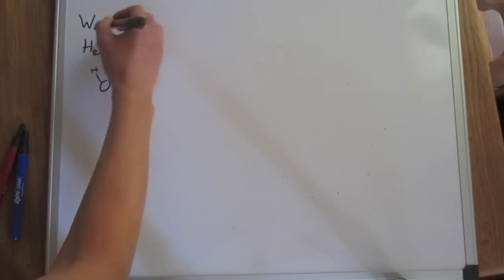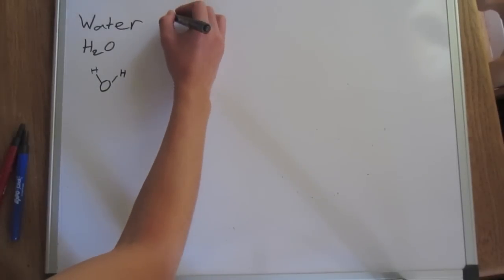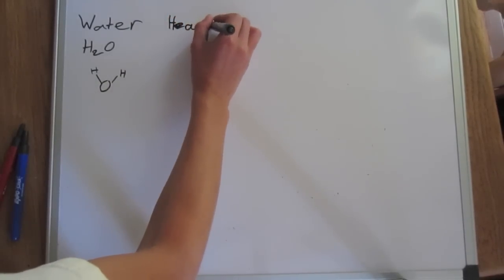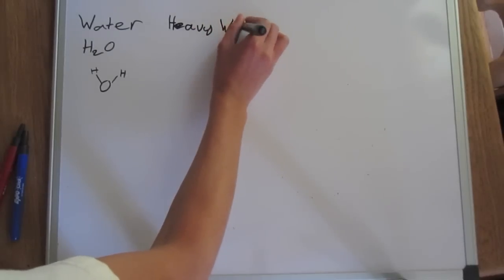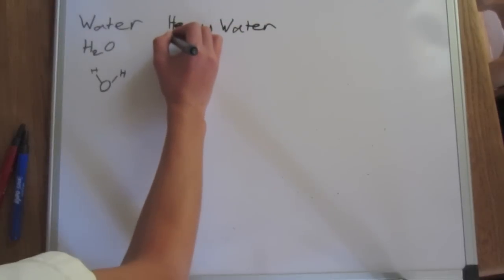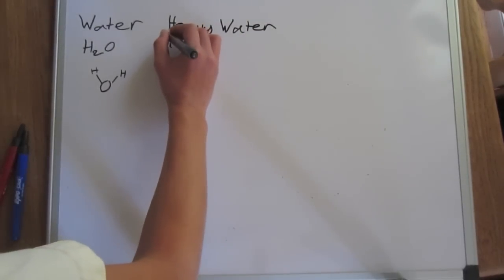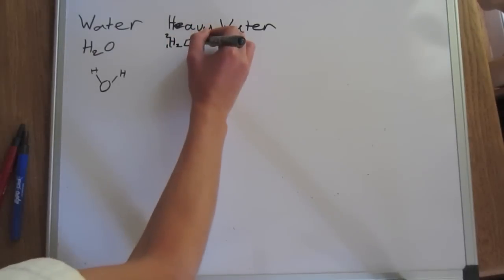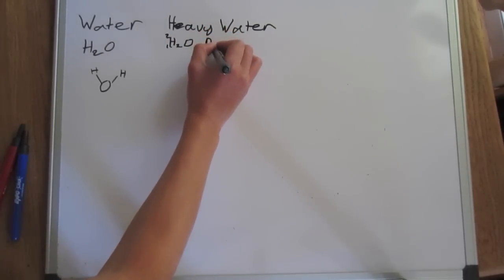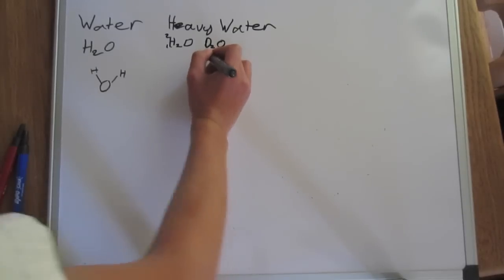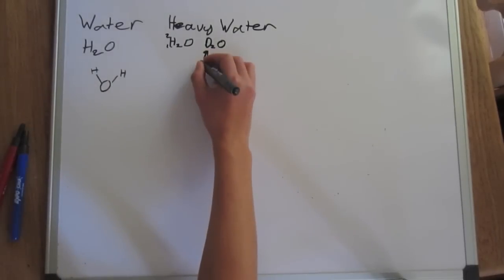And I'm also going to be showing heavy water. And heavy water can be written as H2O like this, or it can be written as D2O, and the D stands for deuterium.